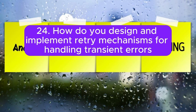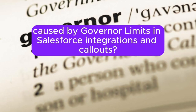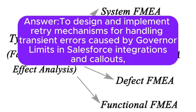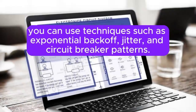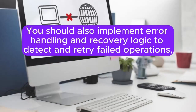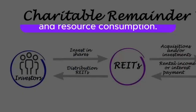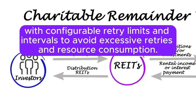Question 24: How do you design and implement retry mechanisms for handling transient errors caused by governor limits in Salesforce integrations and callouts? Answer: To design and implement retry mechanisms, you can use techniques such as exponential backoff, jitter, and circuit breaker patterns. You should also implement error handling and recovery logic to detect and retry failed operations, with configurable retry limits and intervals to avoid excessive retries and resource consumption.